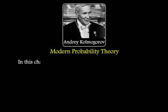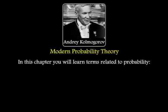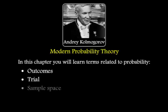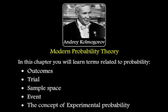In this chapter, you will learn terms related to probability such as outcomes, trial, sample space, event, and the concept of experimental probability.